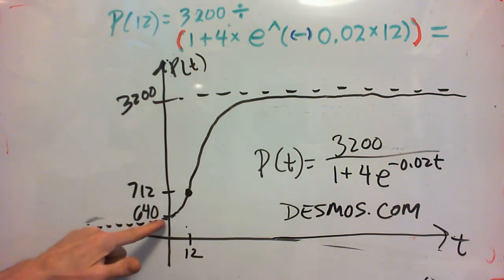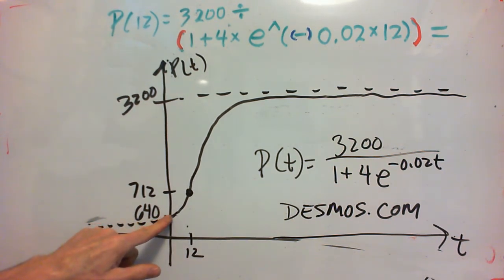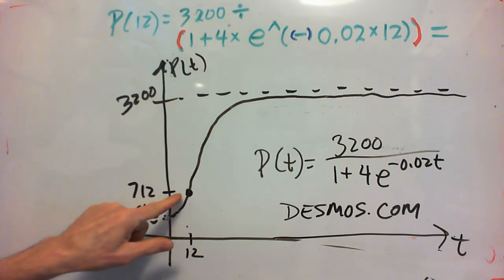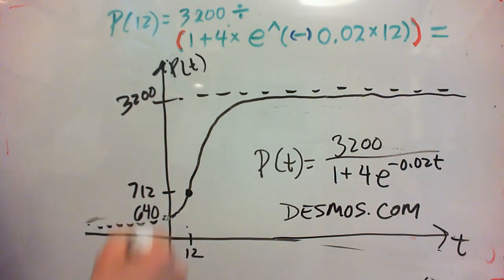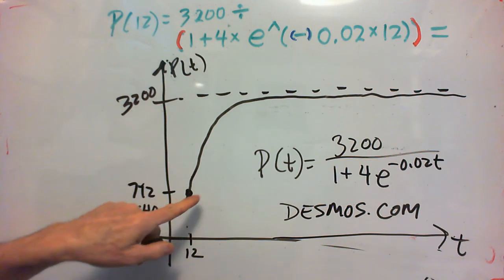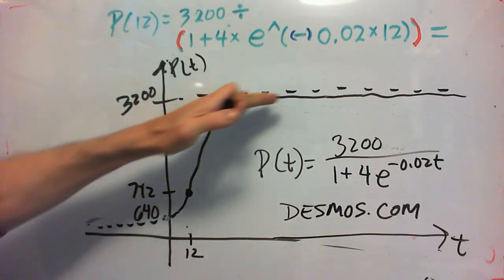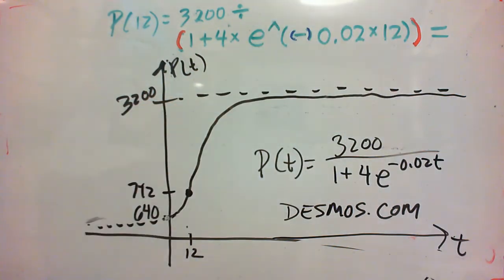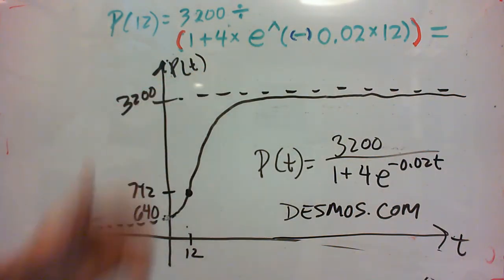And you can see on the curve, 640 is at time 0, 772 is at time t equal 12 months. And then eventually, with enough months, it approaches that 3200 figure.